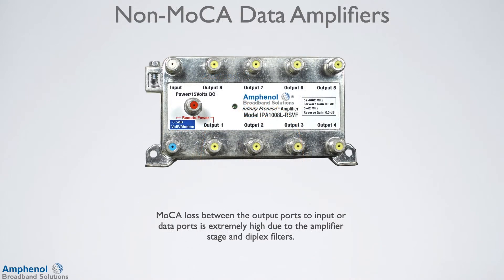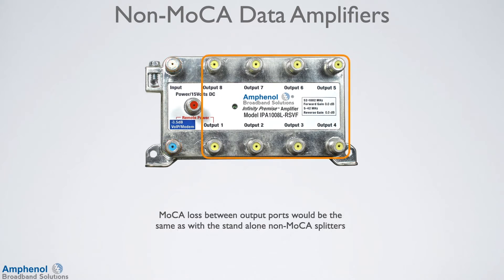Here's a non-MOCA multi-port data amplifier. As with the one-output amplifier, the MOCA loss between the output ports and the input port or data ports is extremely high due to the amplifier stage and diplex filters. MOCA loss between the output ports would be the same as with the standalone non-MOCA splitters.